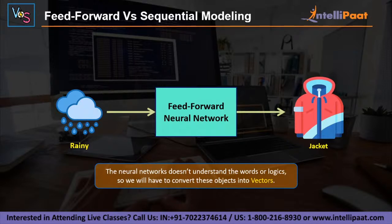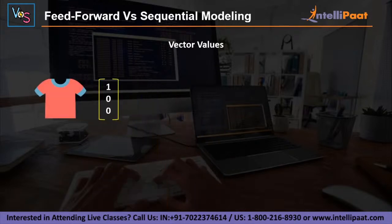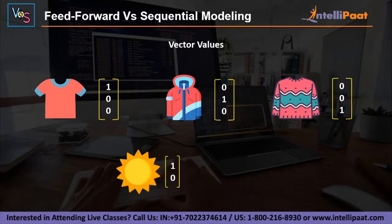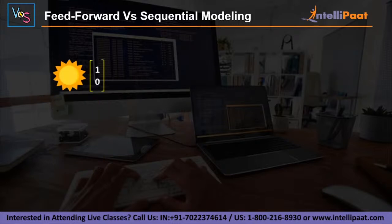In machine learning, we generally use one-hot encoding for that purpose. Here, let me consider random vectors for all these parameters. We will represent the wardrobe with input vectors: t-shirt as 1 0 0, jacket as 0 1 0, and sweatshirt as 0 0 1 — keep this sweatshirt value in mind as we will use it in the next example. The weather parameter will have different dimensions: sunny day represented as vector 1 0, and rainy day as vector 0 1.